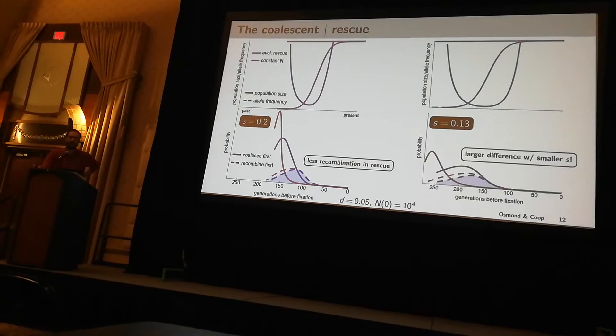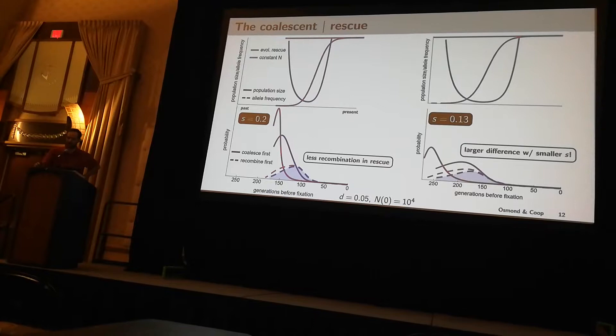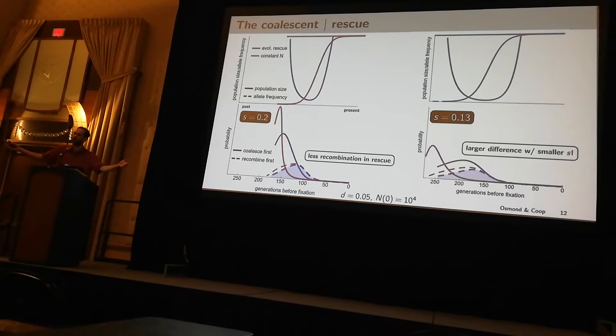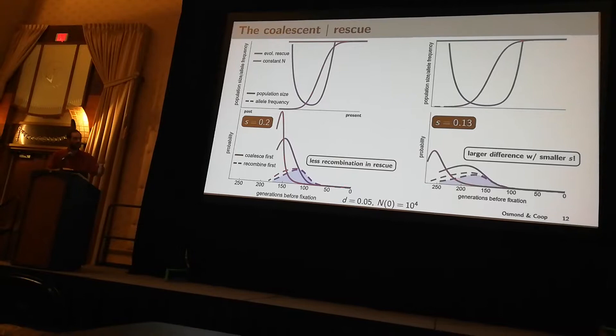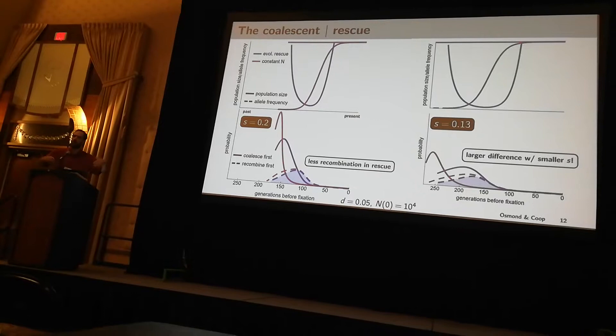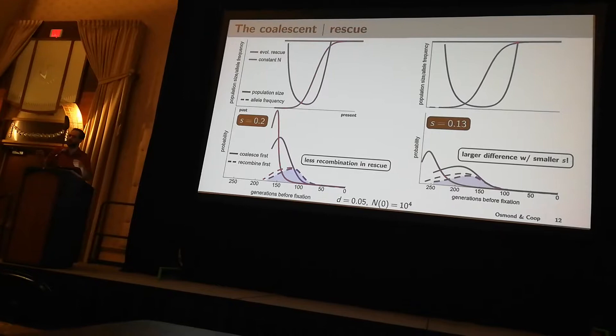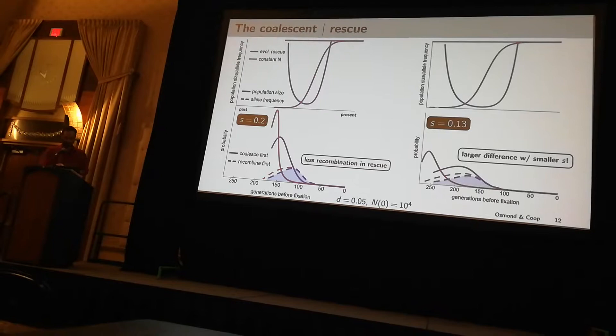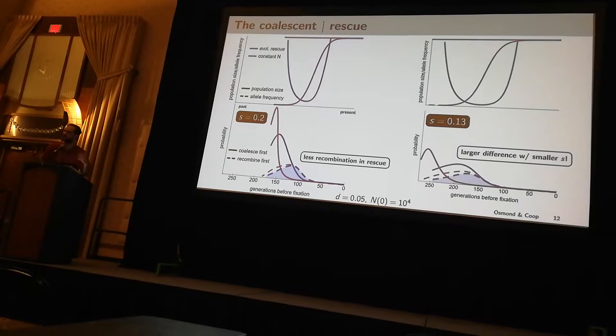This is for a particularly strong selection coefficient, but we can ask what happens when we turn down the strength of selection. In the constant population size case, there's now more time for recombination to occur, and we get more recombination off. In the case of rescue, turning down the selection coefficient also broadens and deepens the bottleneck because of this feedback between the demography and the evolution — they're not independent of one another. And so we actually see little change in the amounts of recombination off. In rescue, we get larger differences between these two scenarios.